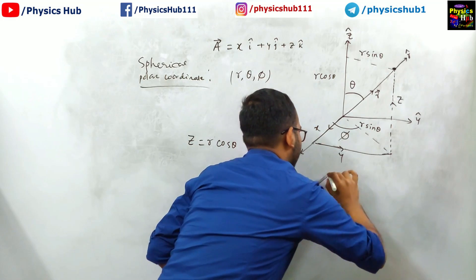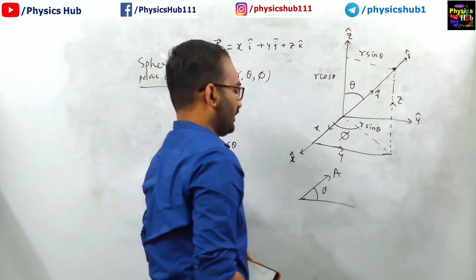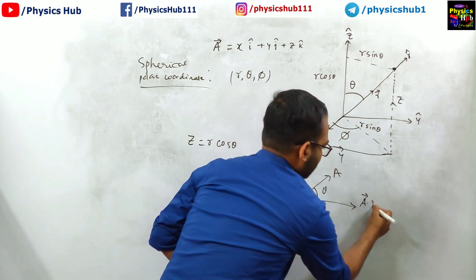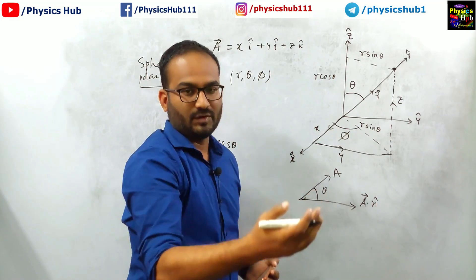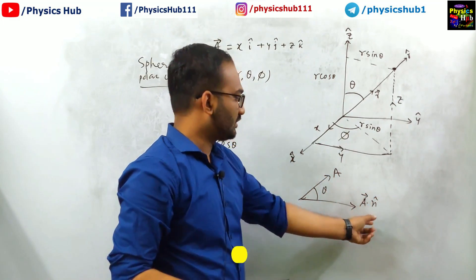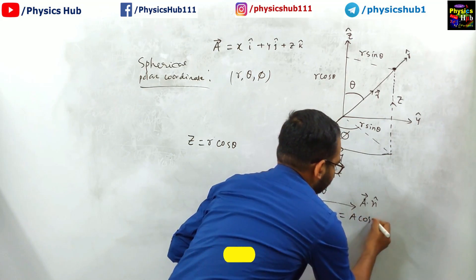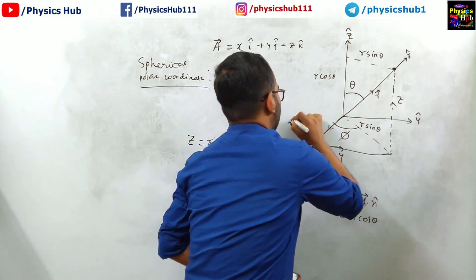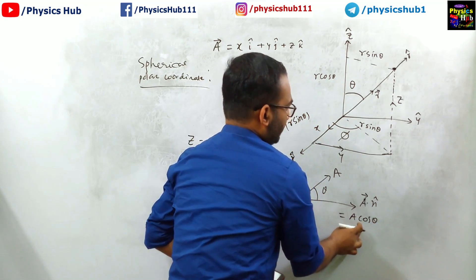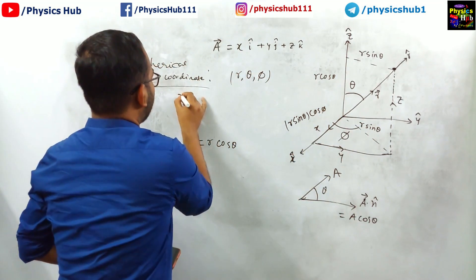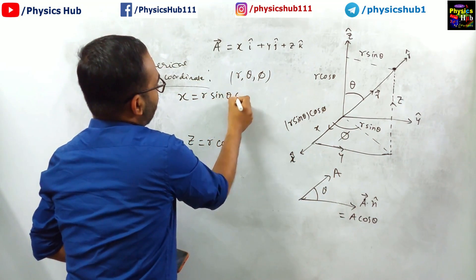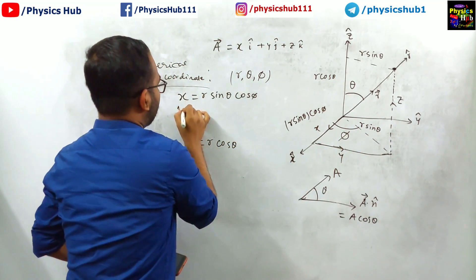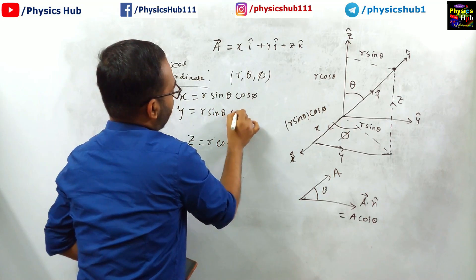If you have a vector A at angle theta, how do you get the component along a direction? You take the dot product with the unit vector along that direction — A dot n-hat — which gives A cos theta. If this is R sin theta and this angle is phi, then the component along x will be R sin theta cos phi. That is why we write x equals R sin theta cos phi. Similarly, the perpendicular component will be R sin theta sin phi, and that is why y equals R sin theta sin phi.